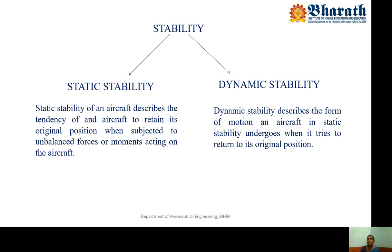Stability is classified into two categories: static stability and dynamic stability. Static stability describes the tendency of an aircraft to retain its original position when subjected to an unbalanced force or moment. Dynamic stability deals with the time history of the aircraft — it describes the form of motion that an aircraft with static stability undergoes when it tries to retain its original position.